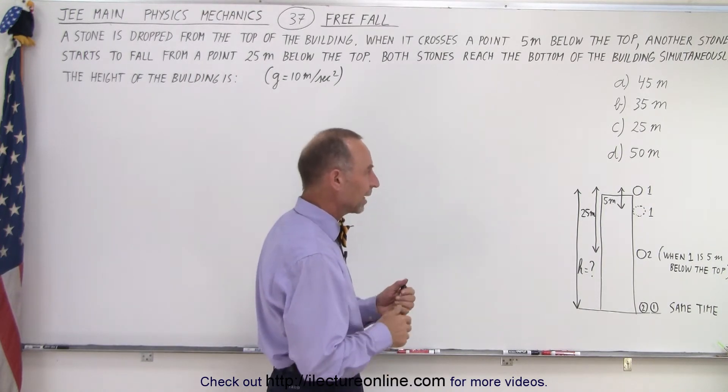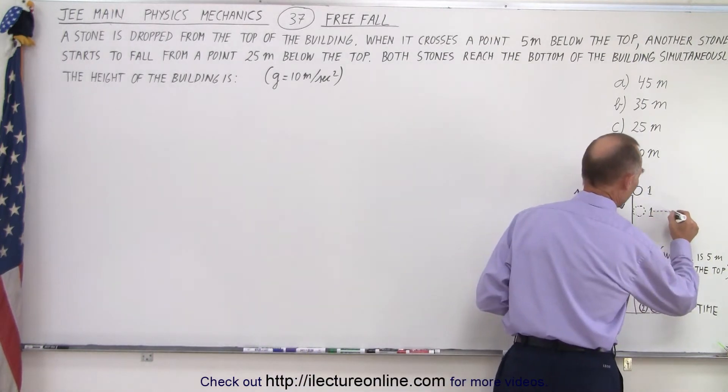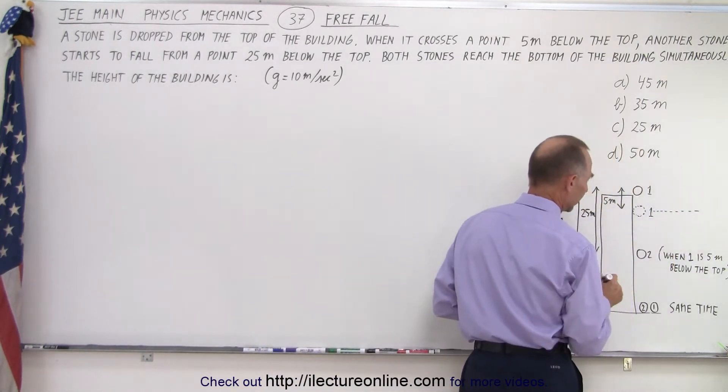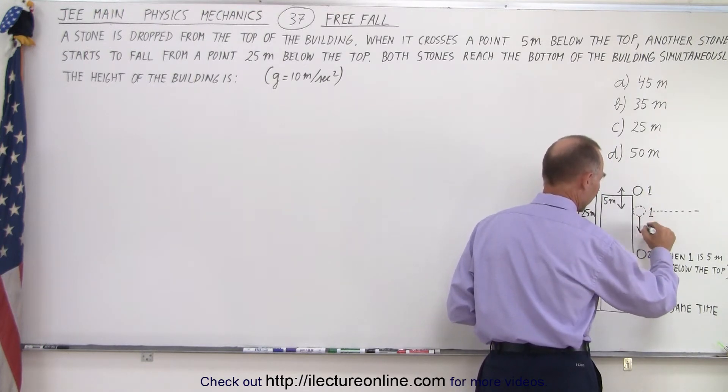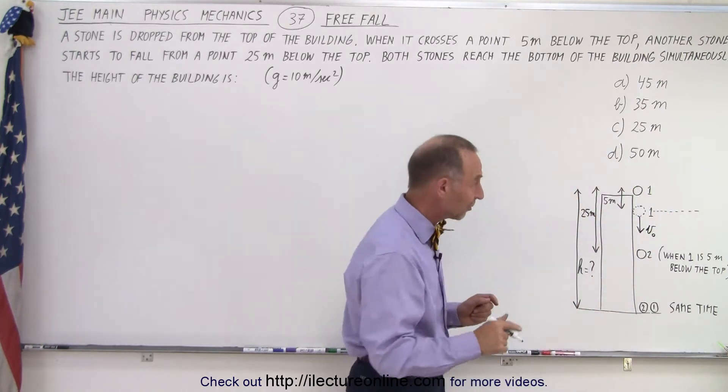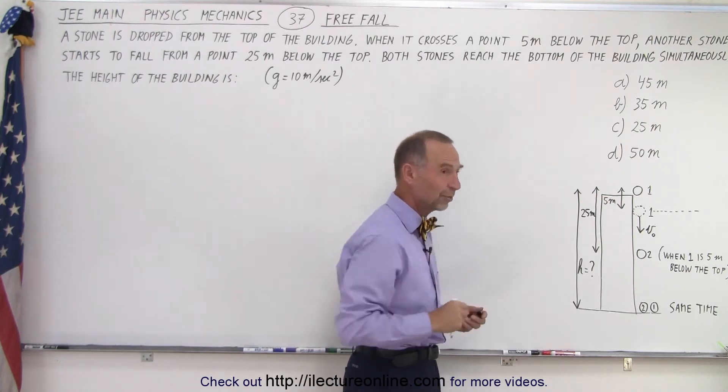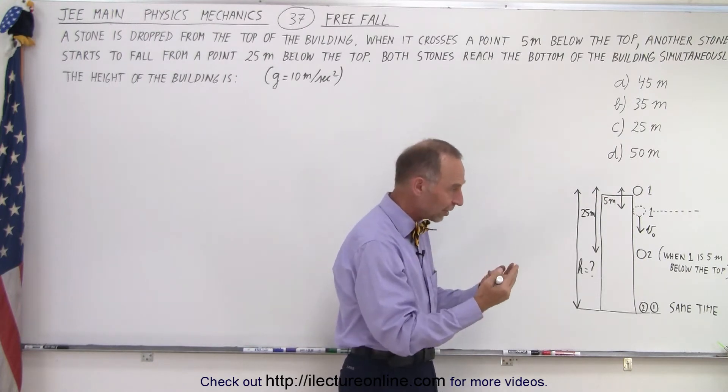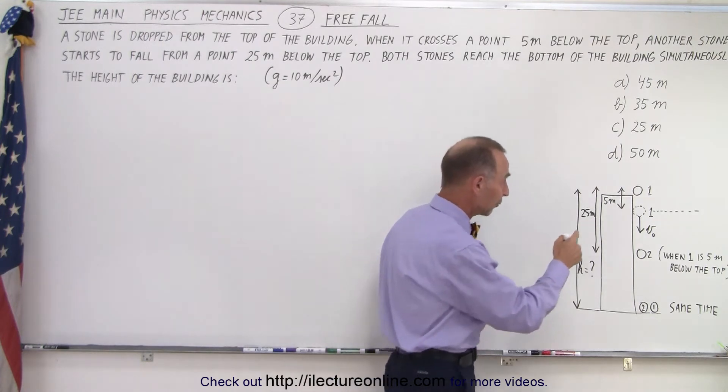So the way to work that would be as follows. Let's start the problem from this point onward, and notice that at this point, this stone already has a velocity going downward because it's dropped 5 meters. Now, notice that if the acceleration is 10 meters per second squared, after 1 second, the ball will drop 5 meters because that's the average velocity for the first second.